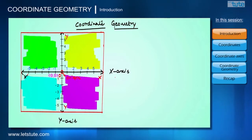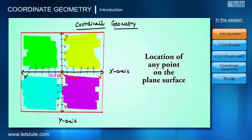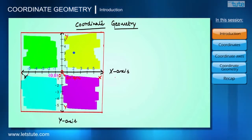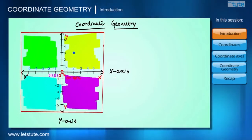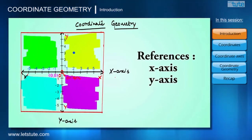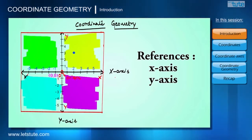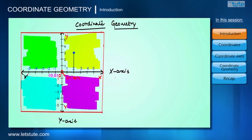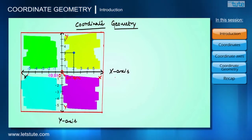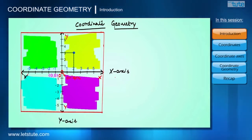These values of the x-axis and y-axis help us find the location of any point on the plane. For example, given a point, we take reference of the x-axis and y-axis. We can see that this point covers two units on the positive x-axis and three units on the positive y-axis.